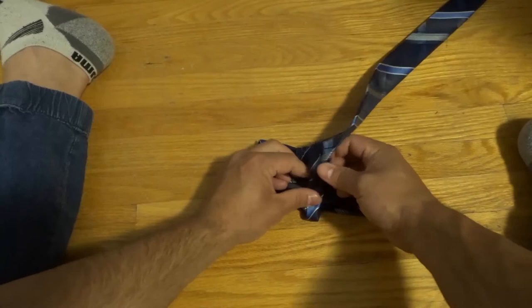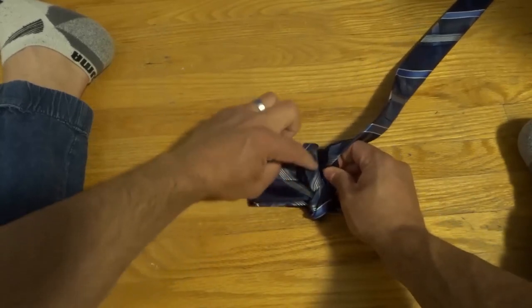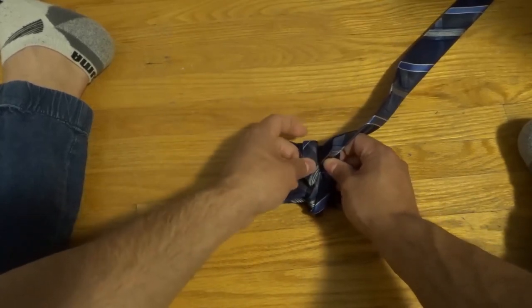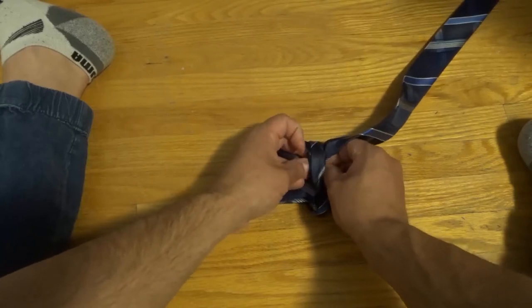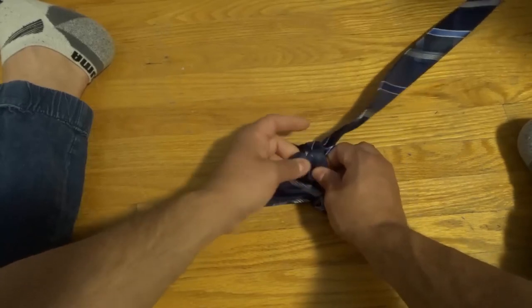So I'm going to take this end of the tie, and I'm going to tuck it underneath this end where we bent in the last step right there. So I'm going to tuck it underneath, check this out, and I'm going to bring it through, just like that.